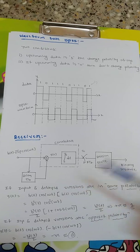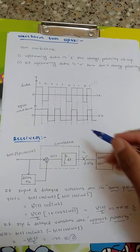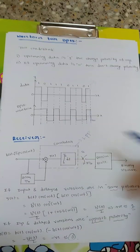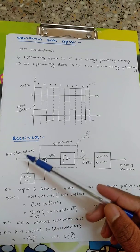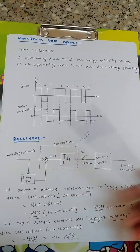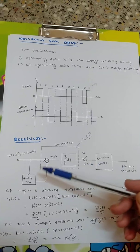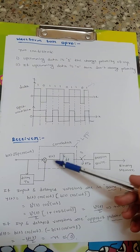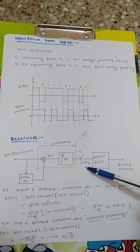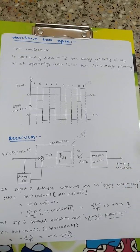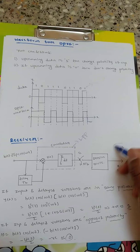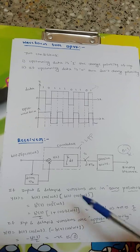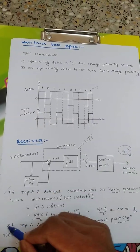At the receiver, we have a correlator and low pass filter. We integrate from 0 to TB. The received signal B(T) · √(2P) · cos(ω T) is multiplied by a delayed version of itself, giving output signal Y(T). This is passed through a low pass filter and sampled, then given to a decision device to get the binary sequence — 0 or 1. There are two conditions based on whether the input and delayed versions are in the same or opposite polarity.